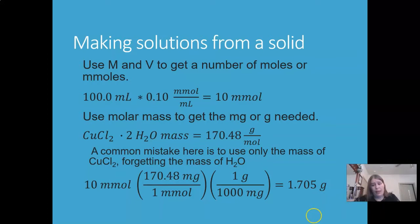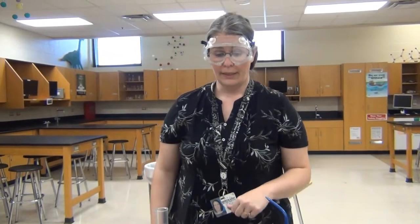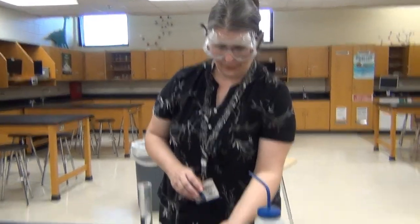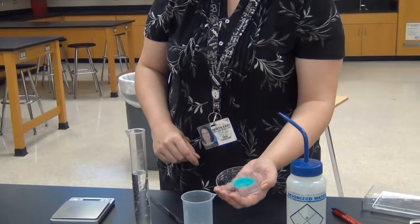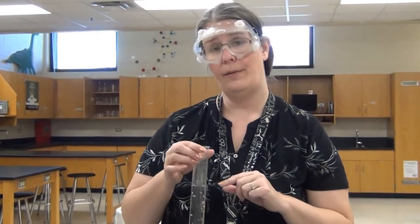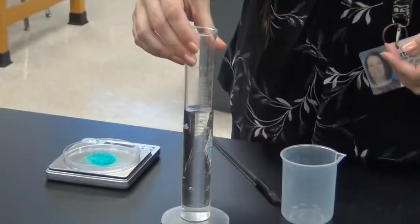Now I've gotten most things ready to start making the solution. You can see I have measured out 1.7 grams of pretty blue copper chloride crystals on the balance. And I've measured out about three quarters of the water here, about 75 milliliters. It doesn't really matter exactly how much because this isn't going to be my final volume. My final volume is going to be 100.